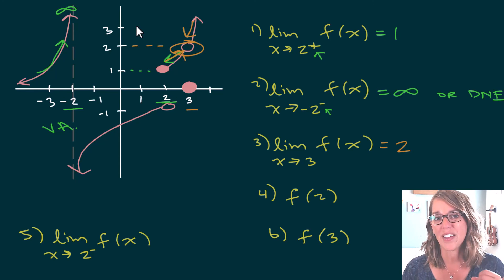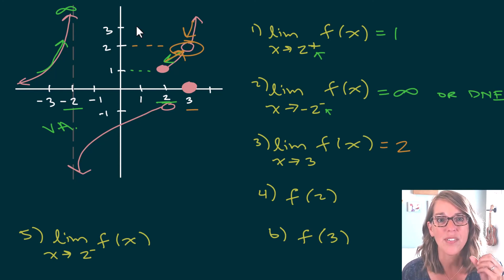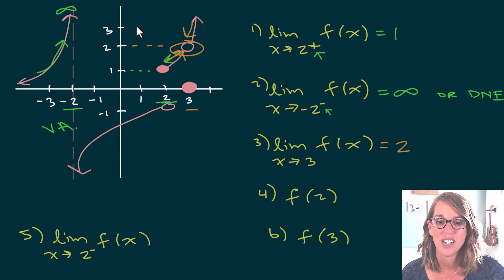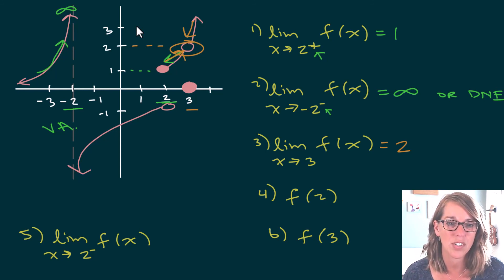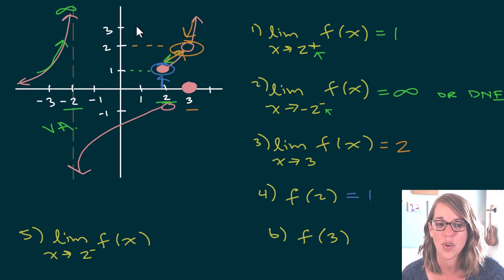Number four: I'm evaluating the function, so I do care about the value of the function at 2. At f of 2, here's 2 — it's going to be the closed circle, and that lines up with 1. So f(2) equals 1.